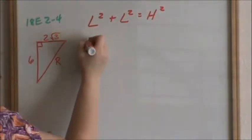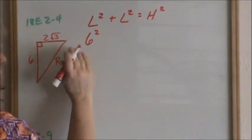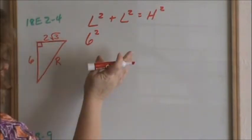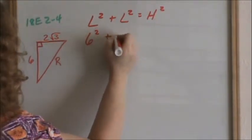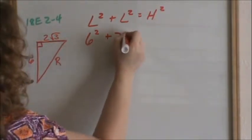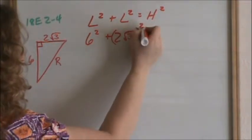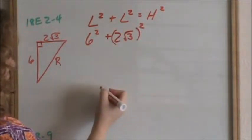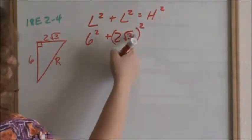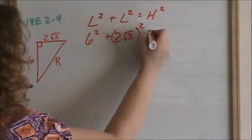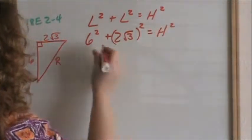We know that one leg is 6 squared. It doesn't matter which leg you write first. The other leg is 2 square root of 3 — I recommend using parentheses around that. So: 2 times the square root of 3, squared, equals hypotenuse squared.